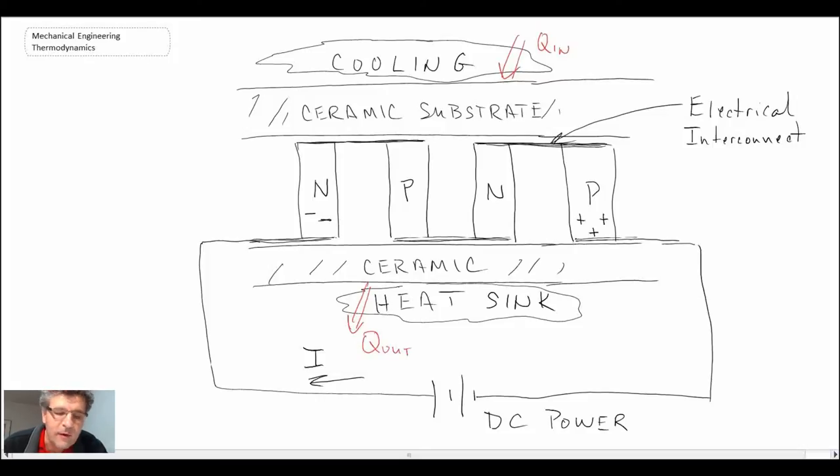They're mounted onto a ceramic substrate, and the ceramic substrate prevents any kind of current flowing into that ceramic. You provide a current source that runs through our N and P junctions, and consequently we will have a cooling effect or heat flowing into the top, and we will have heat generation or a heat source and Q out on the bottom.